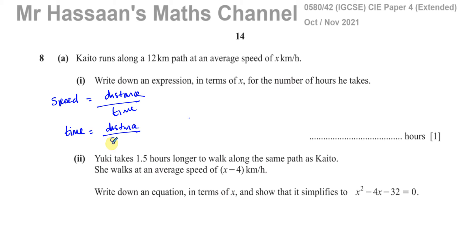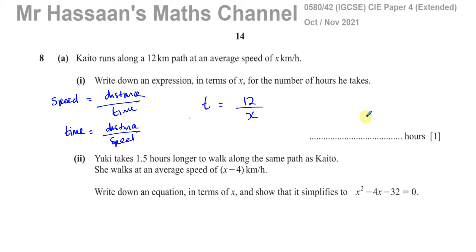Time equals distance over speed. So the number of hours Cato takes: t = 12 kilometers divided by x kilometers per hour. The units are compatible — kilometers divided by kilometers per hour gives hours — and the answer is 12/x, which is the time it takes him to run along the path.